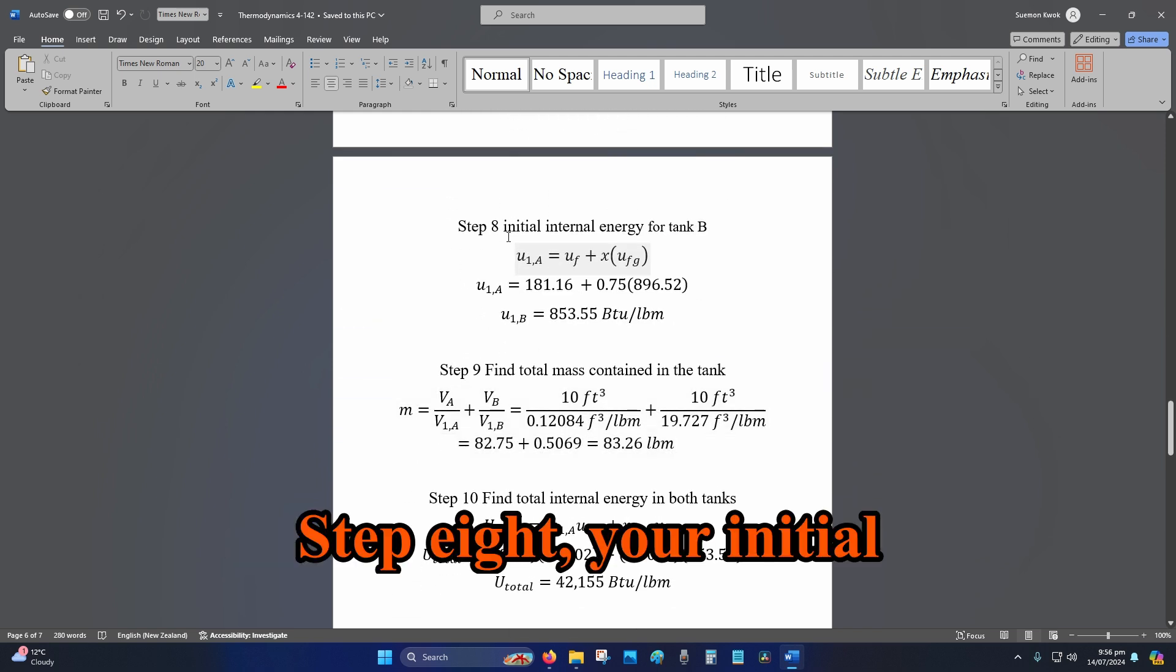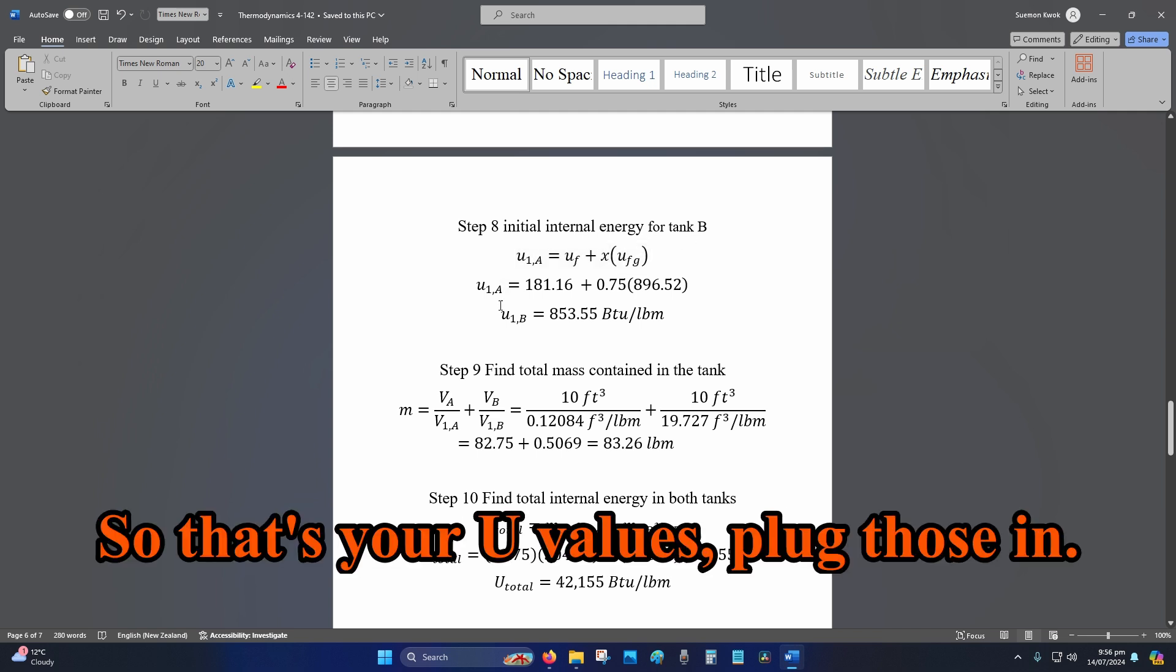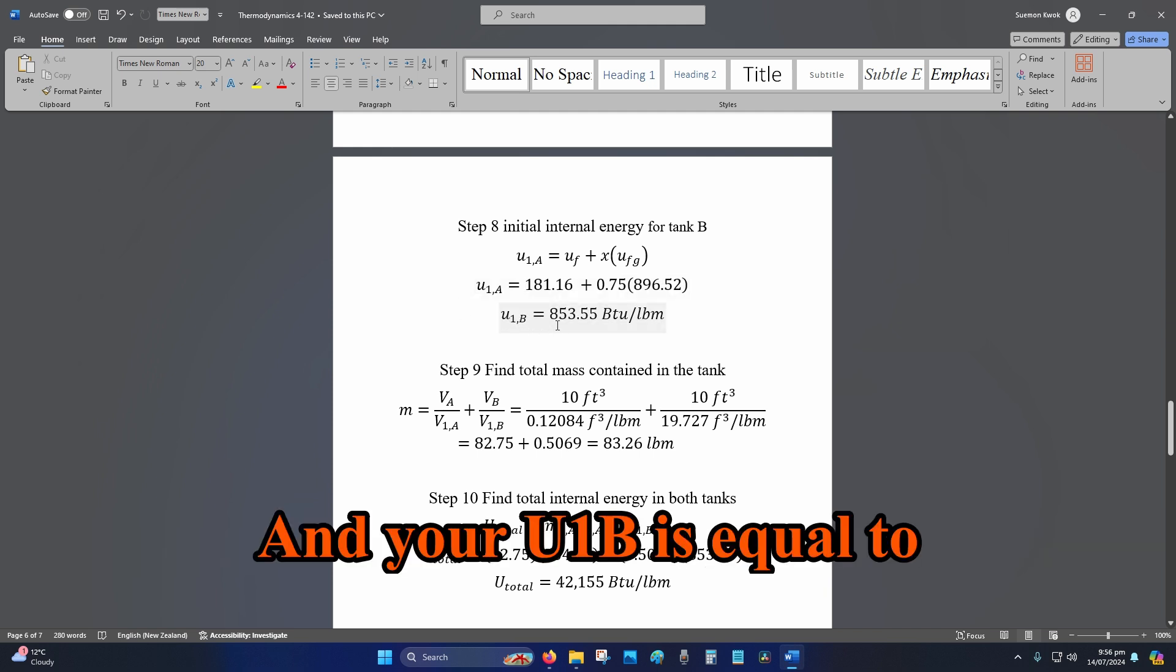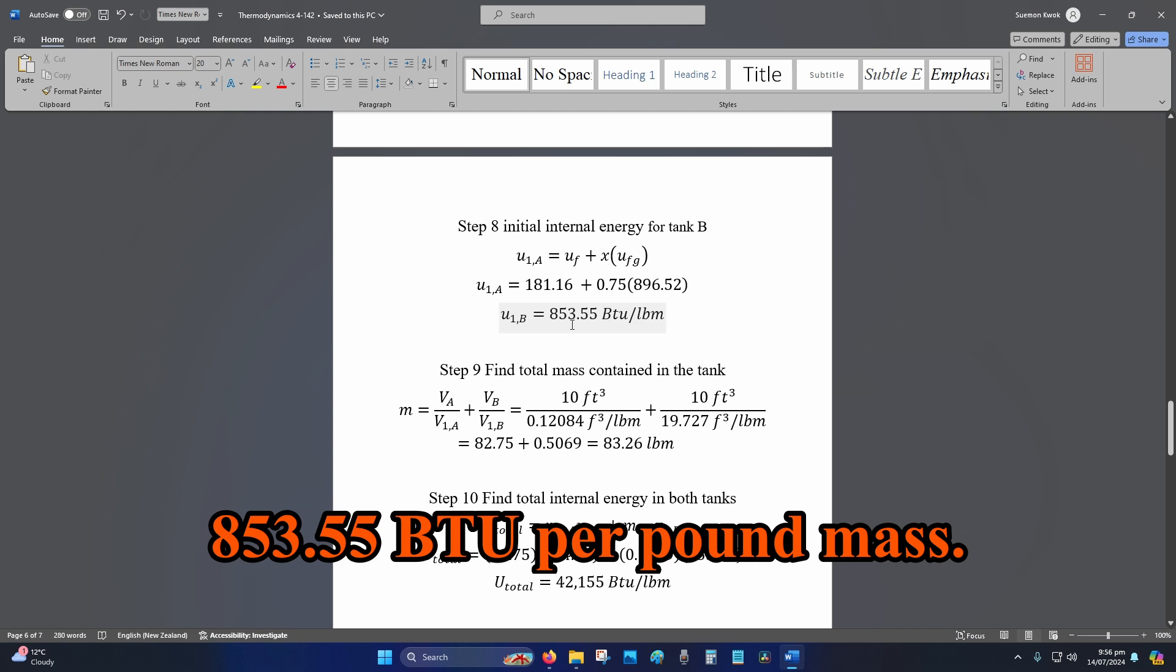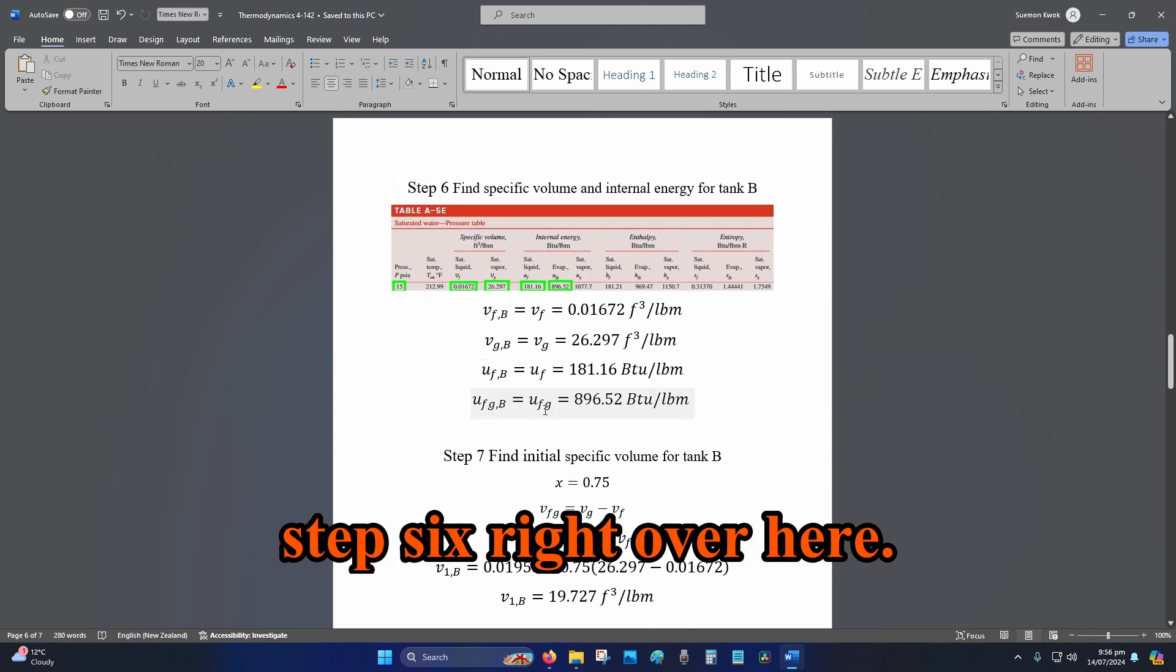Step 8, your initial internal energy for tank B. So, that's your U values. Plug those in. And your U1B is equal to 853.55 BTU per pound mass. These values are found in step 6, right over here.